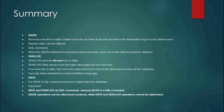Now the summary section. DELETE removes rows from a table — if you provide a filter it removes only that particular record. Deleted data can be rolled back, and it is a DML command. TRUNCATE removes all rows from the table, cannot be rolled back, and it is a DDL command.